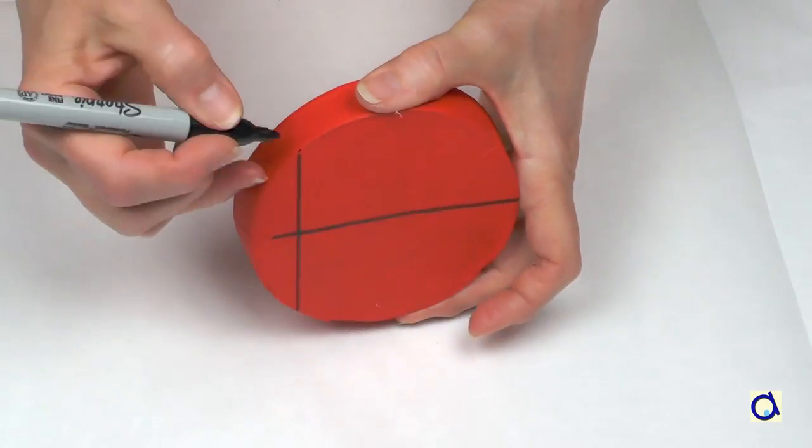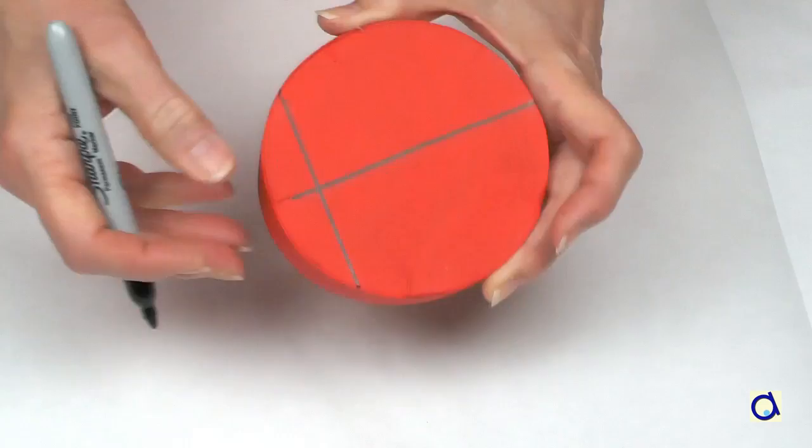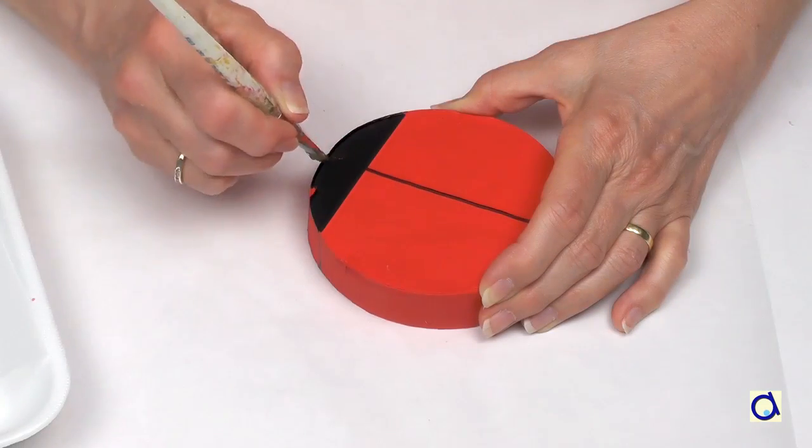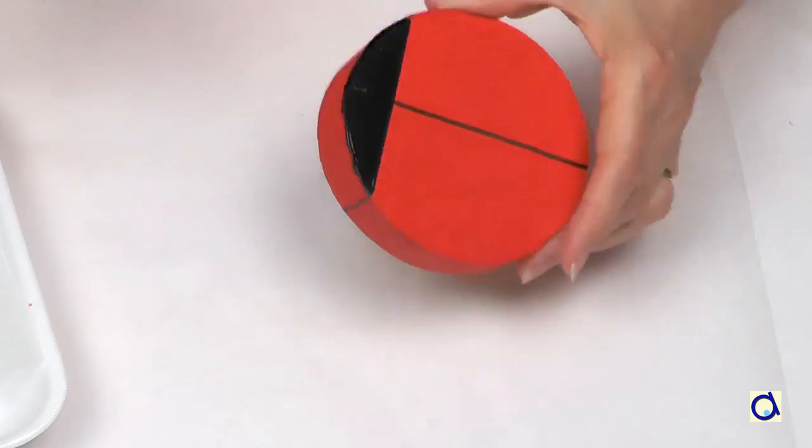Now, draw a line to delimit the head from the rest of the body. Paint the head with black paint.